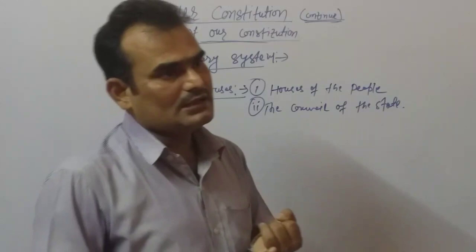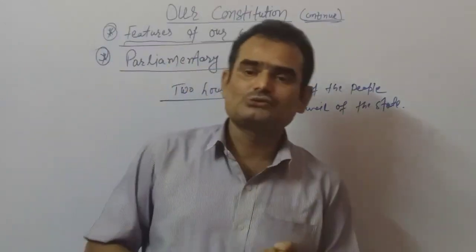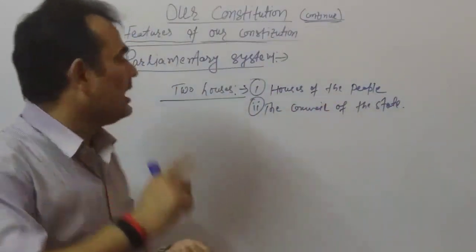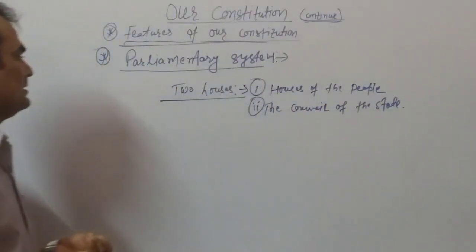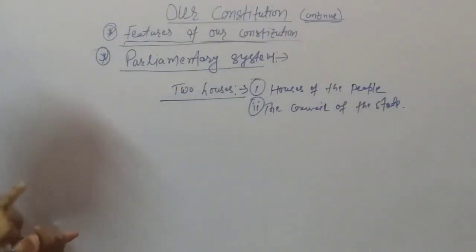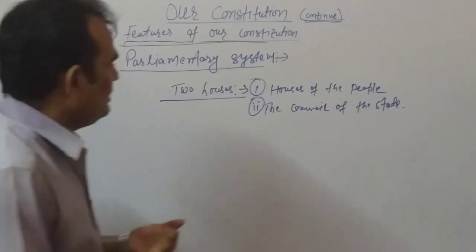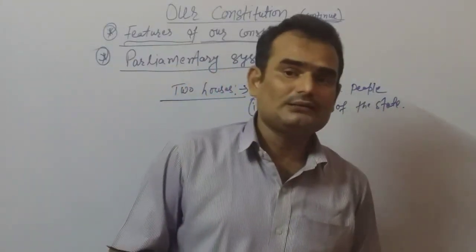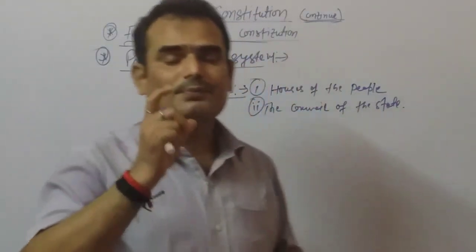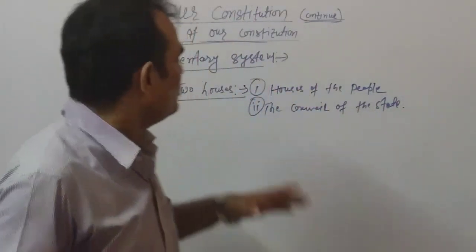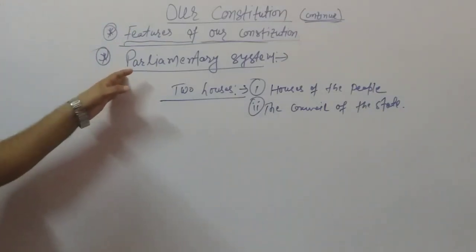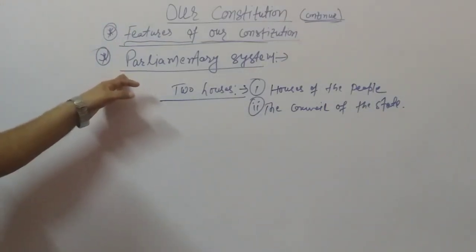So who is answerable to the center? That is your Prime Minister. And who is answerable at the state level? That is your Chief Minister. These are the main points of the parliamentary system.